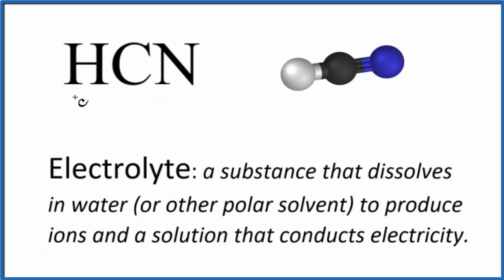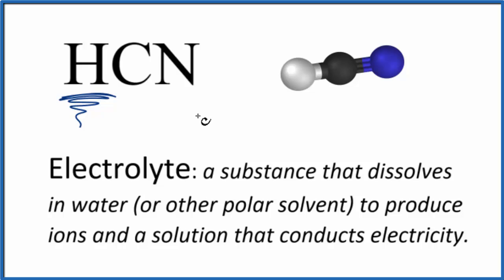For HCN, we should recognize this H up front — that means this is likely going to be an acid. So the question is, is it a weak or strong acid? If it's a strong acid, it's a strong electrolyte. Weak acids are weak electrolytes.